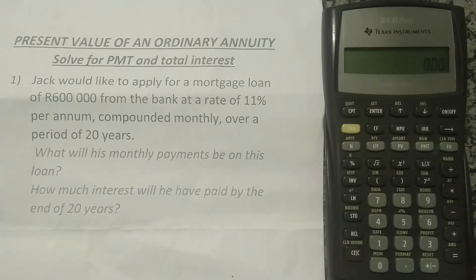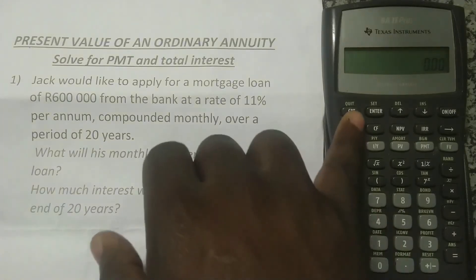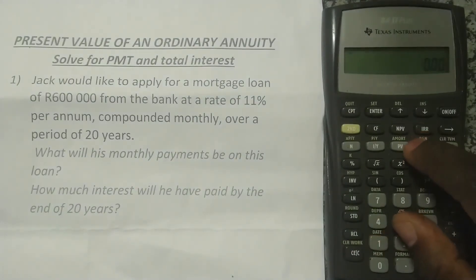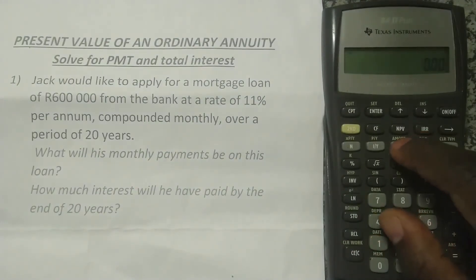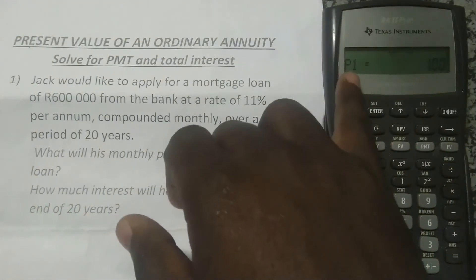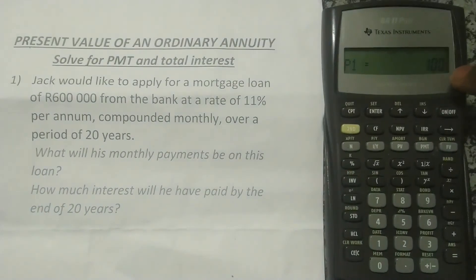To find total interest, I'll use the amortization function. I press Second Function, then PV — you can see AMRT written on top, which stands for amortization. A screen comes up showing P1, asking from what period you want to start.